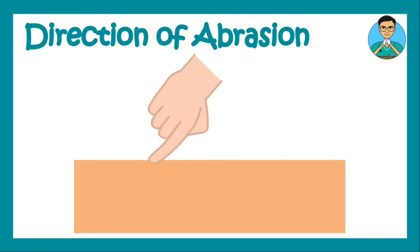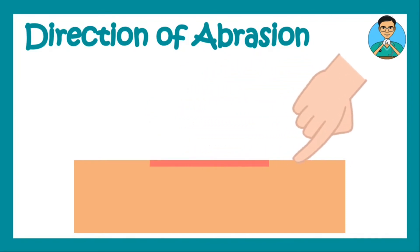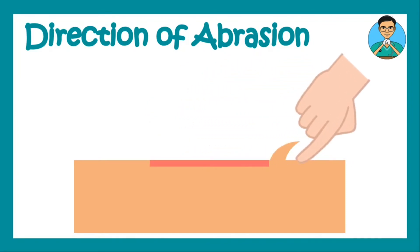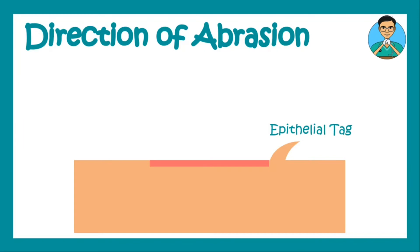Direction of application of force in abrasion is very easy to understand. When you scratch your skin and form an abrasion, at the end of the application of force pathway, you get an epithelial tag. And wherever you get the epithelial tag, remember, the force is always directed towards the epithelial tag. This is how you can easily know how the direction of force is aligned in an abrasion.